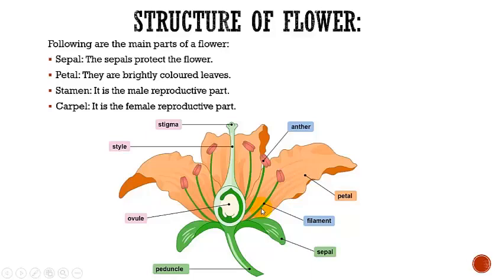The third whorl is the male part of the flower, and this male part is called the stamen. Each stamen has a stalk called a filament. This is the filament. At the tip of the filament there is an anther, which contains a yellow powder called pollen grains, and these pollen grains contain the male cells.